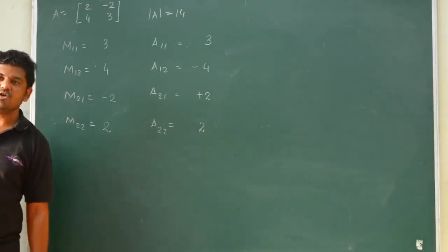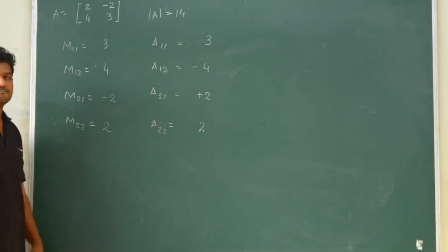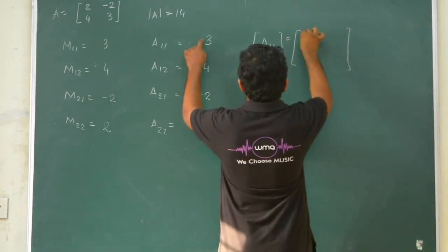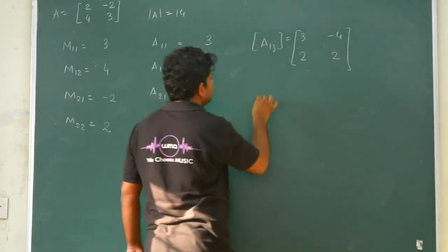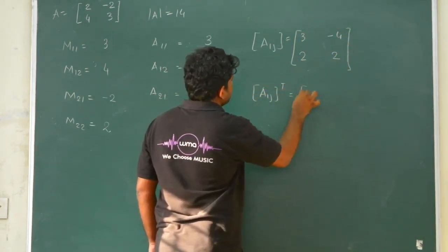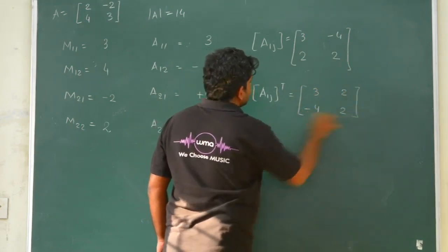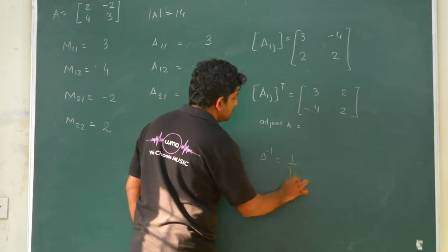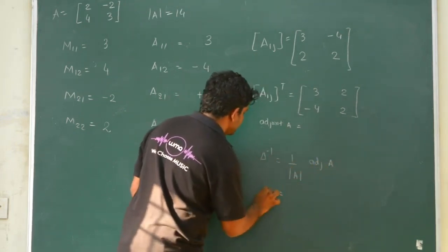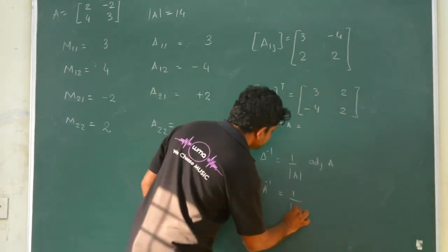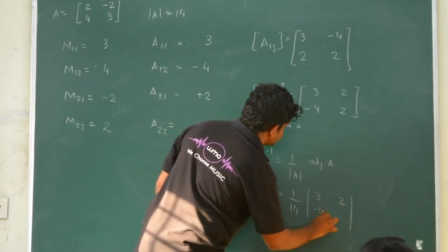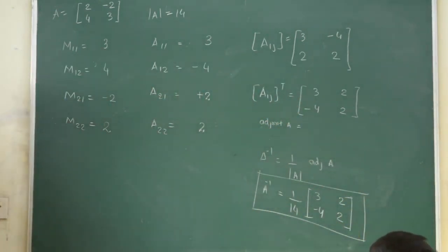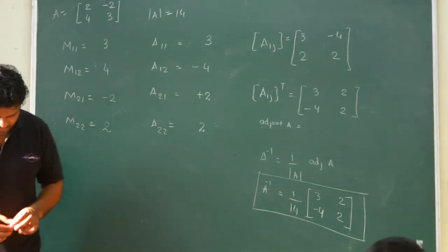Write the matrix of cofactors and then find the adjoint by taking the transpose. The adjoint matrix is obtained by interchanging rows and columns: 3, minus 4, 2, 2. Therefore A inverse equals 1 upon mod A, which is 1 over 14, multiplied by the adjoint matrix. This completes the adjoint method, and we will continue with the next topic.